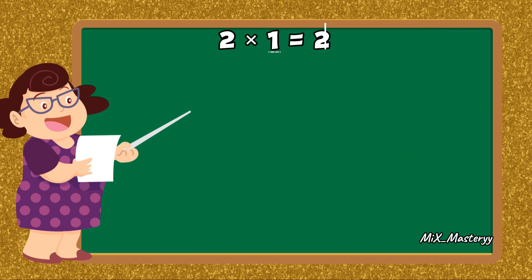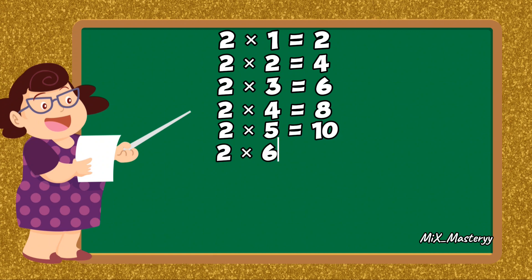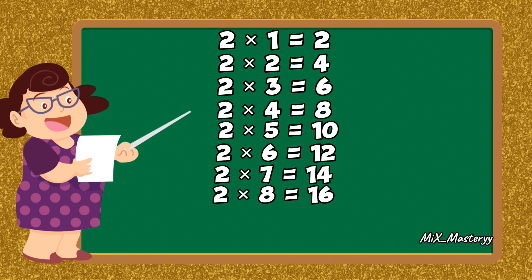Two ones are two, two twos are four, two threes are six, two fours are eight, two fives are ten, two sixes are twelve, two sevens are fourteen, two eights are sixteen, two nines are eighteen, two tens are twenty.